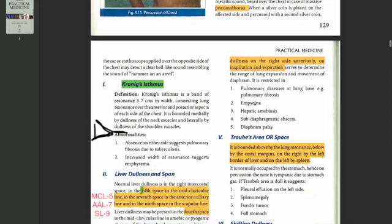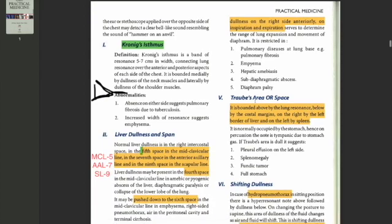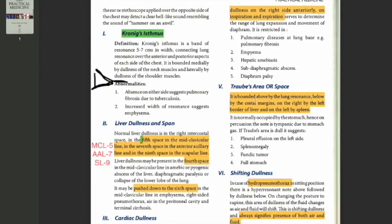There are certain areas where percussion is normally altered and we must know them. A question that's often asked is where is Kronig's isthmus? If this is your sternocleidomastoid, this is your clavicle, and these are your shoulder muscles, then this area on your neck is the Kronig's isthmus. This is normally resonant, but if there is an apex involvement, then this area bilaterally can be altered.